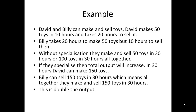David and Billy can make and sell toys. David makes 50 toys in 10 hours and takes 20 hours to sell them, meaning he is great at making toys but not great at selling them. Billy, on the other hand, takes 20 hours to make 50 toys but only 10 hours to sell them — so he is great at selling but it is harder for him to make them.